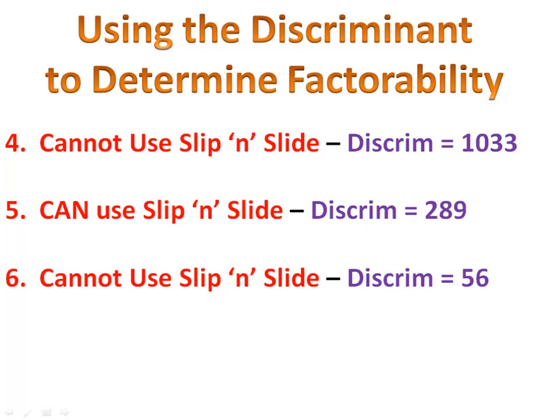So here's what we need to know: if you ever have a trinomial that's quadratic — something x squared plus something x plus something — all you have to do is use b squared minus 4ac. It will tell you if you can factor it using slip and slide or not. If you ever get stuck, this is a nice tool. It may tell you that there is no way to factor whatever you're working with. This is everything you need to know about working with the discriminant in order to determine the factorability of a quadratic trinomial.